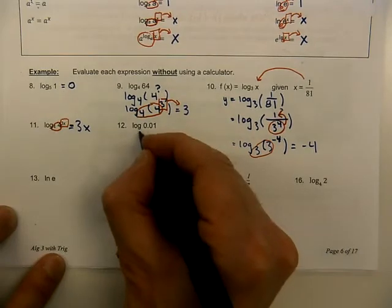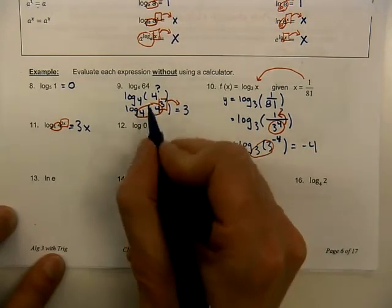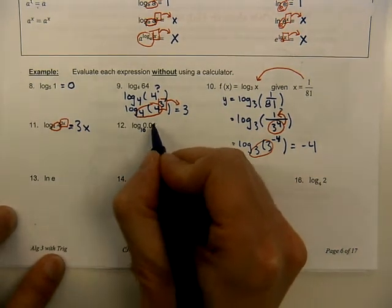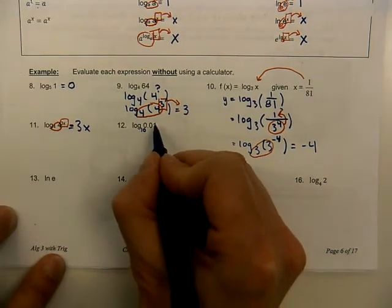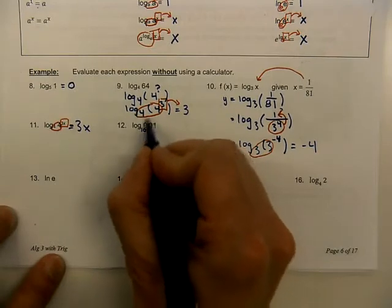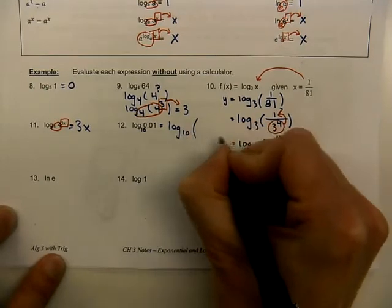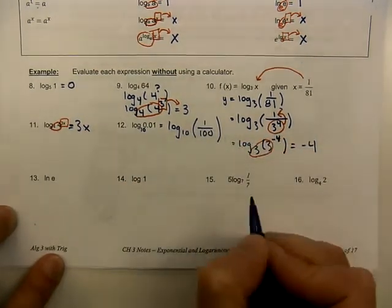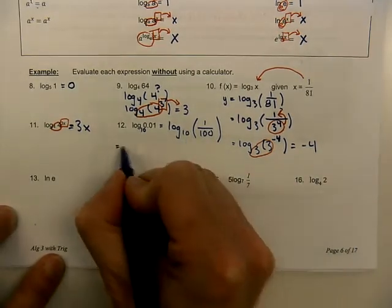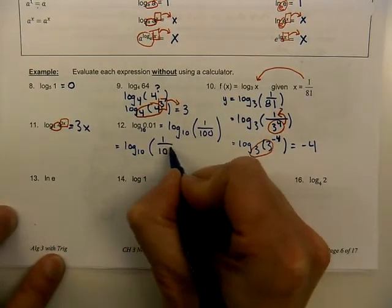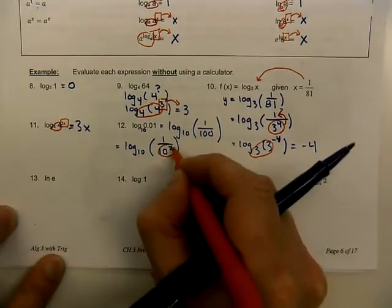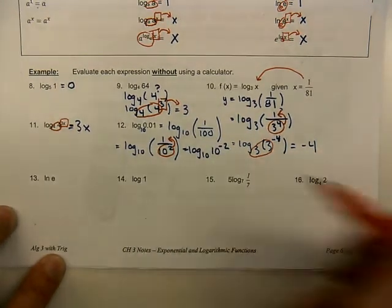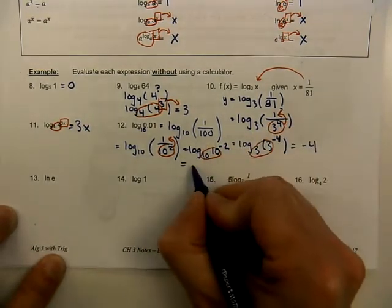Here's number 12: log of 0.01. There's no base, so we know that's a base of 10 — log base 10 of 0.01. We want to match these numbers, so let's replace that decimal with a fraction. What's the fraction equivalent of 0.01? That's 1 over 100. So log base 10 of 1 over 100 — now we try to match that 100 to the 10: log base 10 of 1 over 10 squared. But we have to move that 10 squared into the numerator, making it log base 10 of 10 to the power of negative 2. Now that the bases match, our final answer is negative 2.